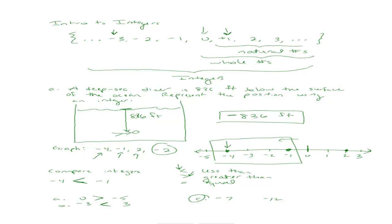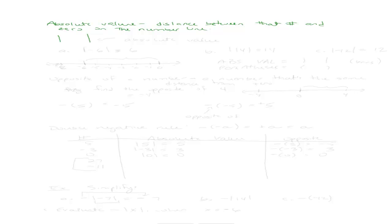Now that we know about negative numbers, this brings us to a new concept: absolute value. A lot of you probably just think of absolute value as giving a positive number, but we need to understand why. The absolute value of a number is simply the distance between that number and 0 on the number line. We use two straight bars to denote absolute value. Absolute value is actually an operation, like addition or subtraction, and it has an order we'll discuss in the order of operations.